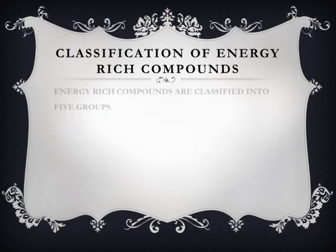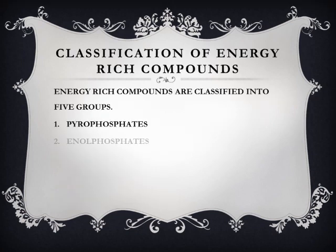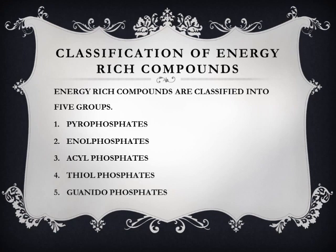The next slide covers the classification of energy-rich compounds. Energy-rich compounds are classified into five groups: pyrophosphates, enol phosphates, acyl phosphates, thiol esters, and guanidino phosphates. These highly energetic compounds release a large amount of energy when they break down. This concludes everything about bioenergetics.